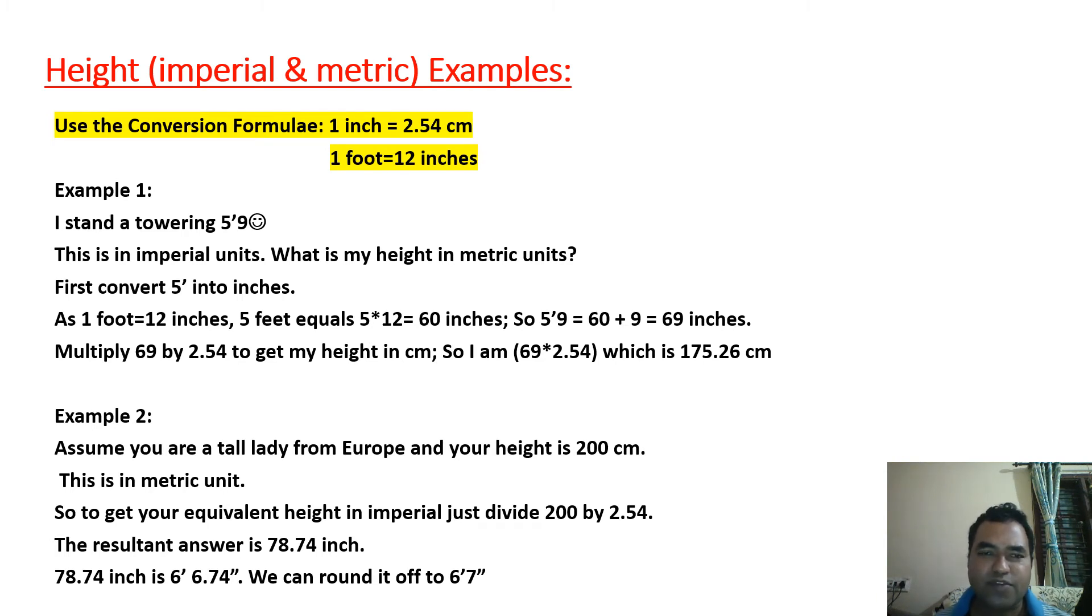For example 1, I stand a towering 5 feet 9 inches. This is in imperial units. So we are supposed to convert this into metric units. Please observe how I convert this now. I need to convert into inches first. First I will convert 5 feet into inches. As you know, 1 foot equals 12 inches. So 5 feet equals 5 times 12 which is 60 inches. So 5 feet 9 equals 60 plus 9 equals 69 inches.